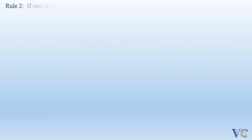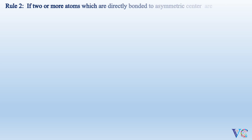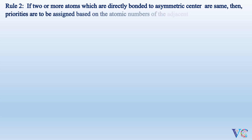Rule 2: If two or more atoms which are directly bonded to the asymmetric center are the same, then priorities are to be assigned based on the atomic numbers of the adjacent atoms, till the first point of difference is attained.